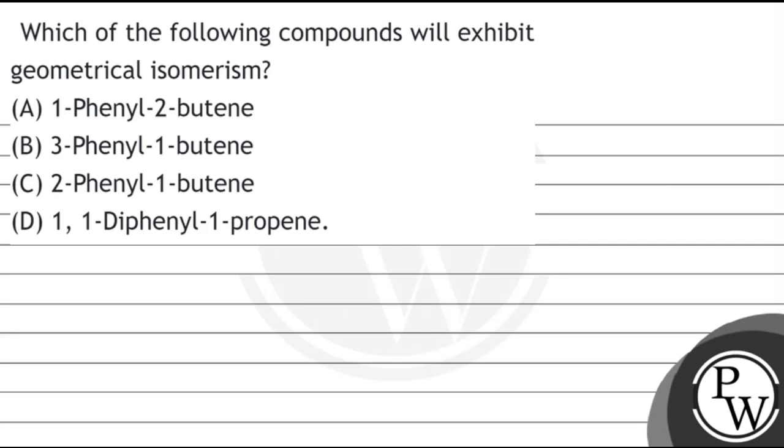Which of the following compounds will exhibit geometrical isomerism? Option A: 1-phenyl-2-butene. Option B: 3-phenyl-1-butene. Option C: 2-phenyl-1-butene. And Option D: 1,1-diphenyl-1-propene.